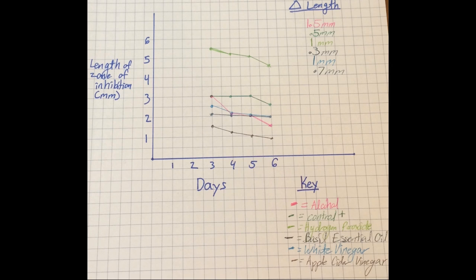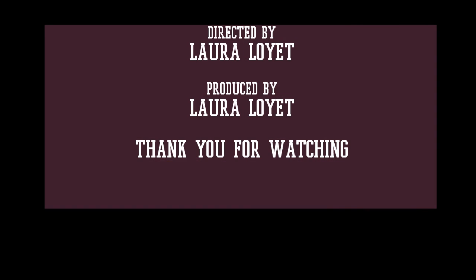Here is a graph of the data. As you can see, every substance had their zone of inhibition shrink. The greatest change in length was alcohol, followed by apple cider vinegar. In conclusion, hydrogen peroxide had the best effect at first, although basil essential oil was the most consistent throughout the six days. Thank you for watching.